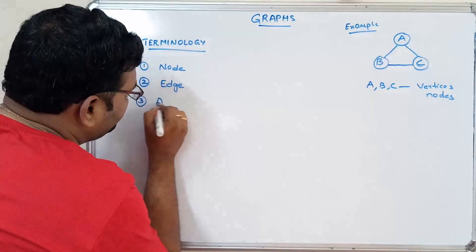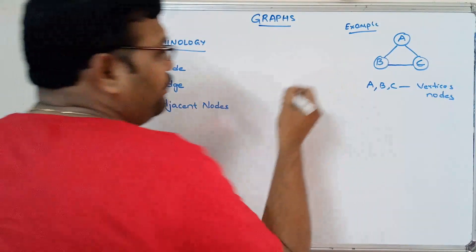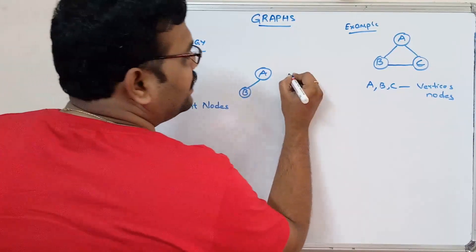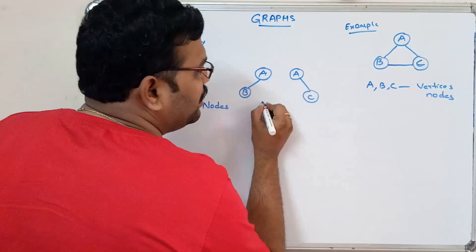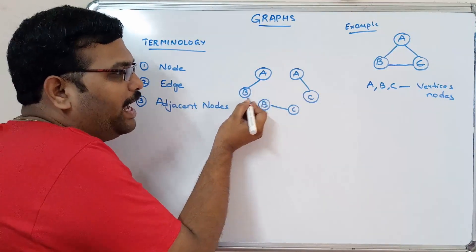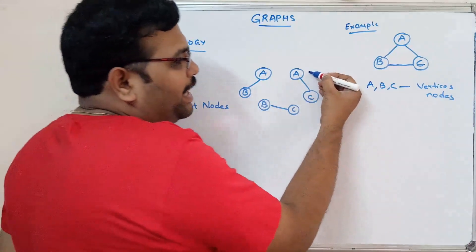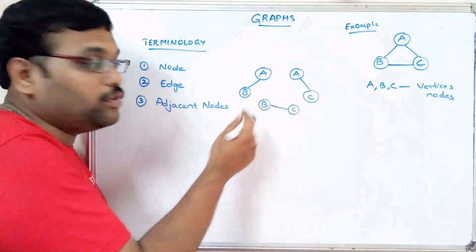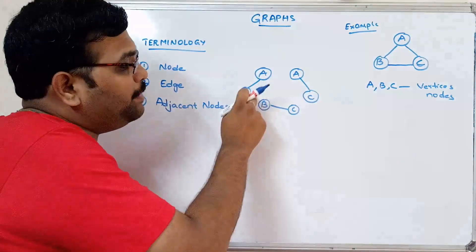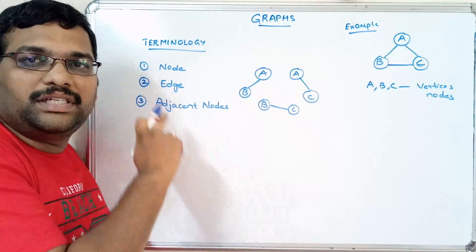The third term is adjacent nodes. If you consider any edge — for example A-B, A-C, and B-C — there are three edges. For the edge A-B, nodes A and B are the starting and ending points. Nodes connected by an edge are called adjacent nodes. So A and B are adjacent, A and C are adjacent, and B and C are adjacent nodes.